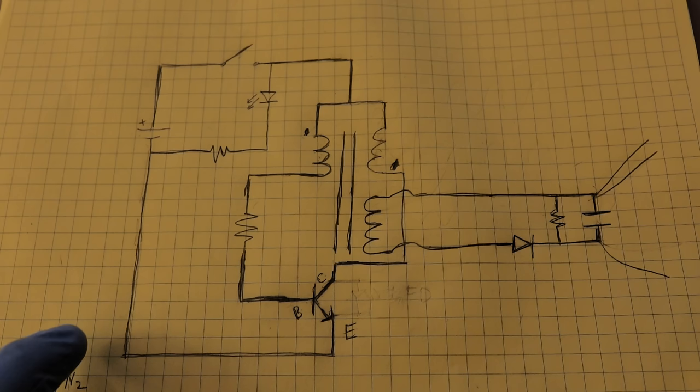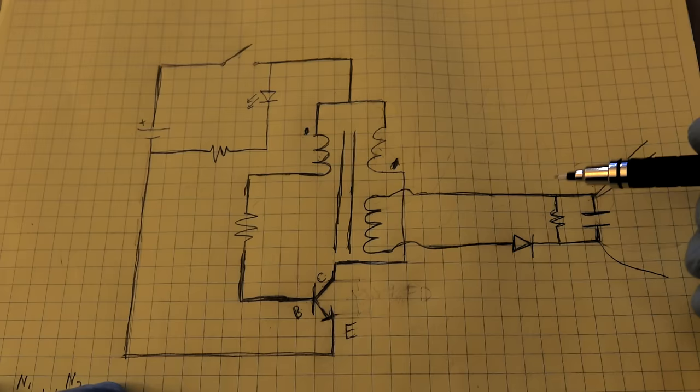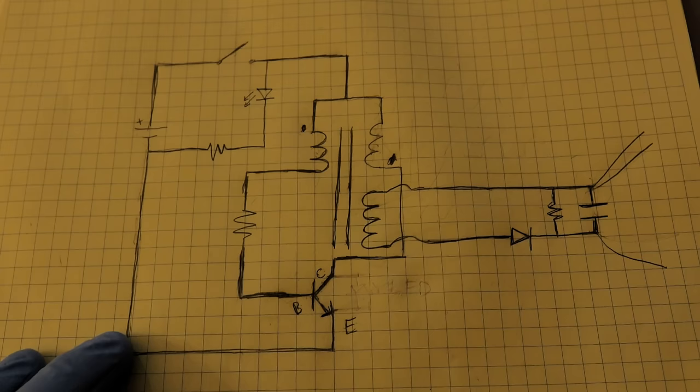So this resistor here is called a bleed resistor, and its purpose is when you're not using the bug zapper, it drains this capacitor. And you want that so you don't shock yourself when you're not using the bug zapper.